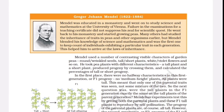Gregor Johann Mendel (1822–1884). Mendel was educated in a monastery and went on to study science and mathematics at the University of Vienna. Failure in the examinations for a teaching certificate did not suppress his zeal for scientific quest. He went back to his monastery and started growing peas. Many others had studied the inheritance of traits in peas and other organisms earlier, but Mendel blended his knowledge of science and mathematics and was the first one to keep count of individuals exhibiting a particular trait in each generation. This helped him to arrive at the laws of inheritance. Mendel used a number of contrasting visible characters of garden peas: round/wrinkled seeds, tall/short plants, white/violet flowers and so on.